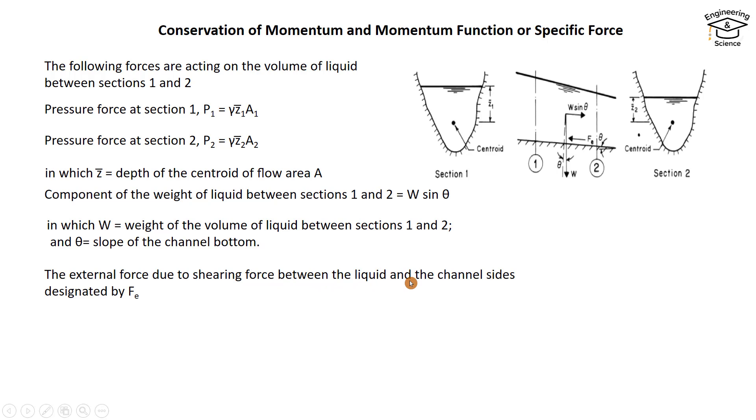The resultant force Fᵣ acting on the volume of liquid in the downstream direction is Fᵣ = γz̄₁A₁ - γz̄₂A₂ + W sin θ - Fₑ. This represents the pressure force in the direction of flow.